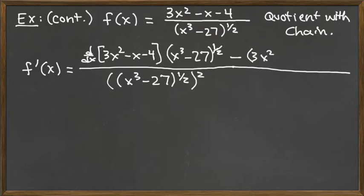which is 3x squared minus x minus 4 times the derivative of the bottom. So we've got the x cubed minus 27 raised to the one half. Okay, so now we are ready to start taking the little derivatives that we need.